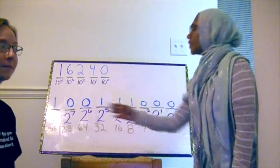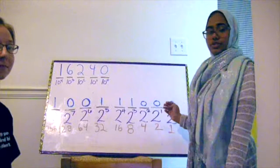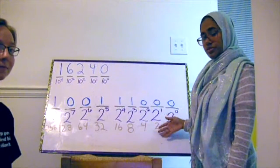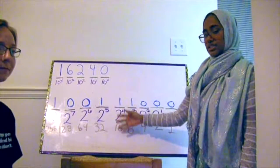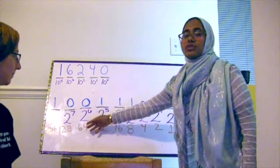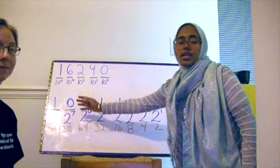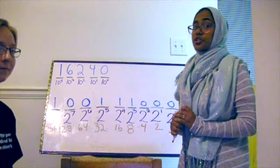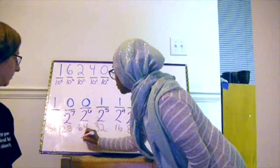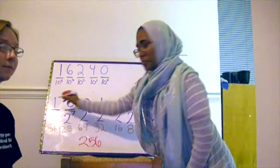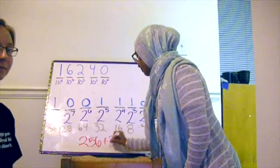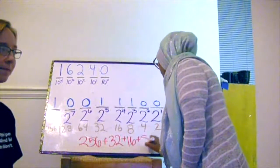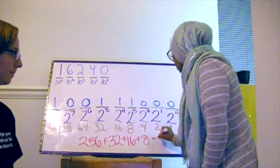Now here we have another example: 10011100. We'll do the same thing that we did last time. We count 0 ones, 0 twos, 0 fours, 1 eight, 1 sixteen, 1 thirty-two, 0 sixty-fours, 0 one-hundred-twenty-eights, and 1 two-hundred-fifty-six. We again add the powers of 2 that do exist. So we have 256 plus 32, plus 16, plus 8. All in all, that gives us 312.